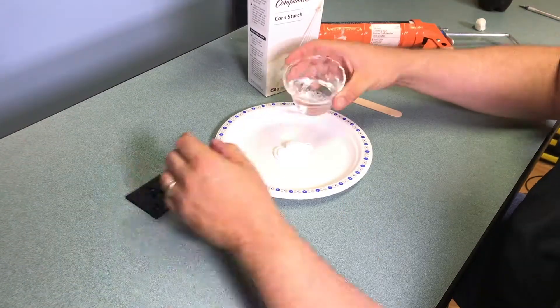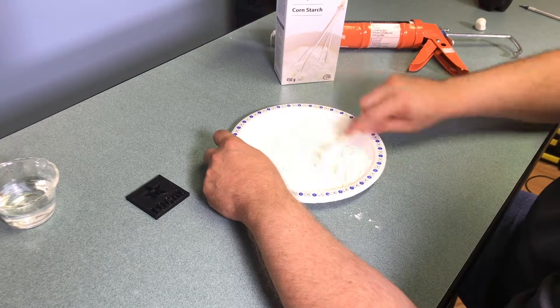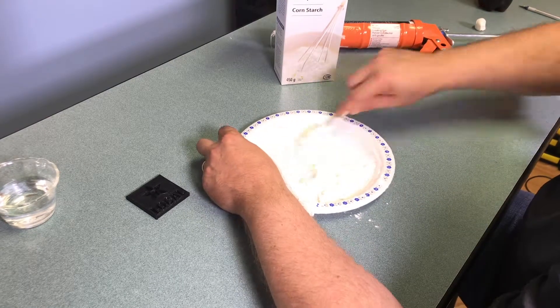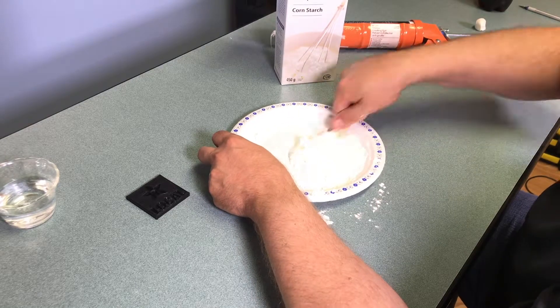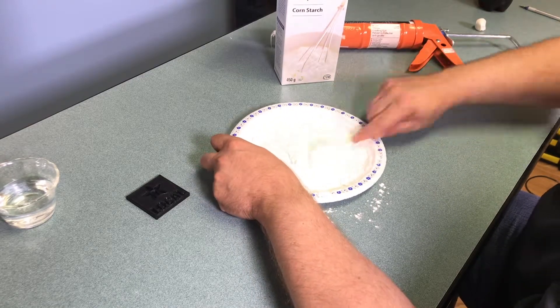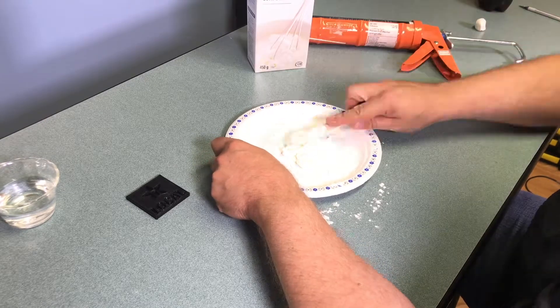Next, I created some Proto Putty according to the King of Random's recipe which is basically 100% silicone. I used white in this case. Add a little bit of water for activation and then add cornstarch until the stickiness is gone and it's easier to handle with your bare hands or with gloves if you prefer.